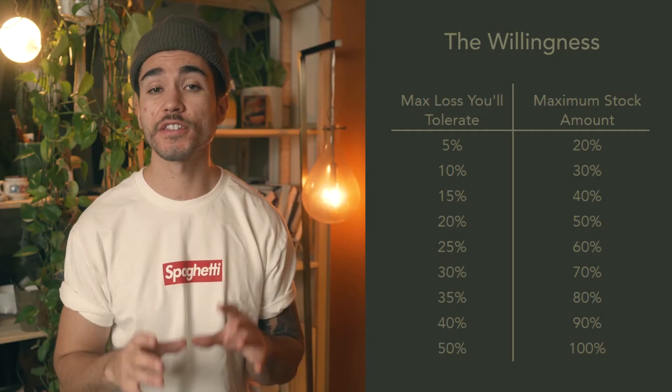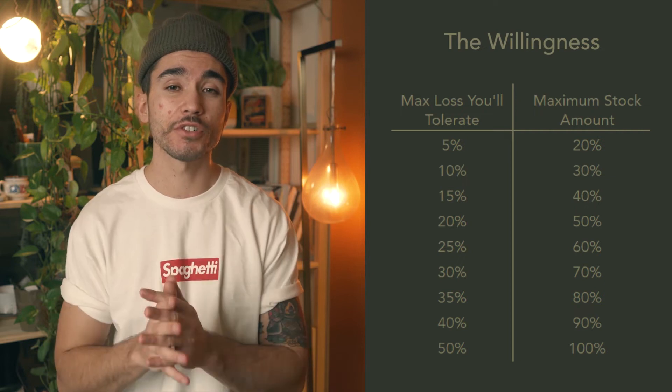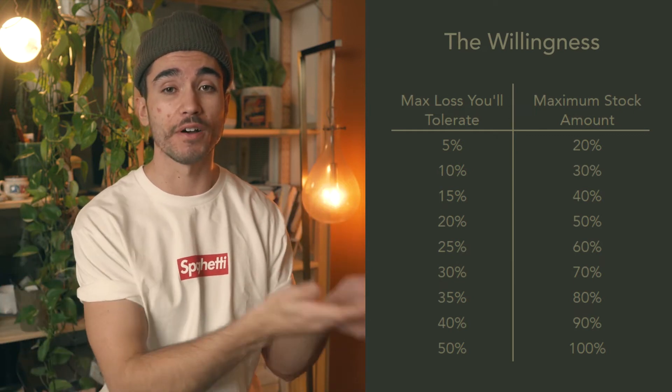The next criteria is your willingness to take on risk. While you might have assessed that you're able to take on risk, you also have to ask yourself if you're willing to take on risk — because we're human. Emotions sometimes come into play and can override our judgement and cause us to make mistakes. Just like our friend was willing to do that gainer off the cliff, you need to assess if you're willing to take on risk investing your money. Probably the easiest way to do this is by asking yourself: what's the largest drop you'd be willing to take in your portfolio in order to stay invested? Here are Larry's guidelines for that. You may think you can handle a huge drop and sleep at night, but until you've actually experienced one, you can't be sure. The last thing you want to do is panic-sell at the bottom of a down market.